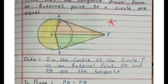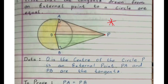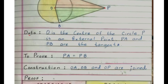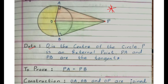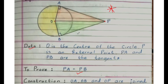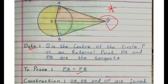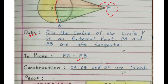Now students, draw a circle. P is the external point. A and B are the points on the circle. O is the center of the circle. Join PA and PB, OA and OB. From the given figure, O is the center of the circle, P is the external point, PA and PB are the tangents. We need to prove that PA equals PB. Construction: join OA, OB, and OP.